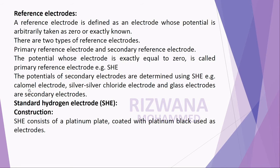Examples of secondary electrodes include the calomel electrode, silver-silver chloride electrode, and glass electrode. Now, what is the construction, working, applications, and disadvantages of the standard hydrogen electrode?